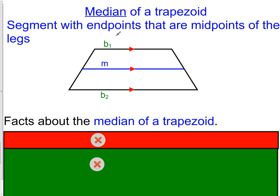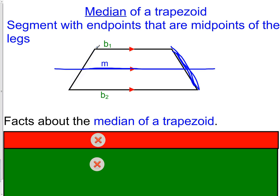Lastly, we have the median. The median of a trapezoid is a segment with endpoints that are the midpoints of the legs. Looking at the picture, here we have the leg traced in blue. At its midpoint, we create a median. We have the two midpoints of the sides of our isosceles trapezoid, and if we connect those midpoints, we have a median. Remember, median is very similar to middle.